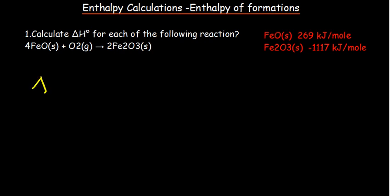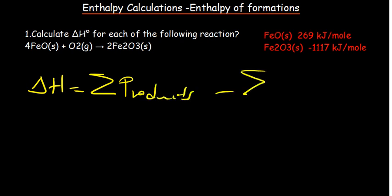Therefore, when using enthalpy of formations, our enthalpy of the reaction is given by the summation of the enthalpy of formation of products minus the summation of the enthalpy of formation of reactants. What we need to understand is that whenever we're dealing with enthalpy of formations, elements — whether existing diatomically or monatomically — we consider them to have zero enthalpy of formation. So where we have oxygen, it's not going to be part of our calculations.